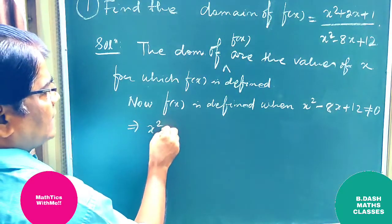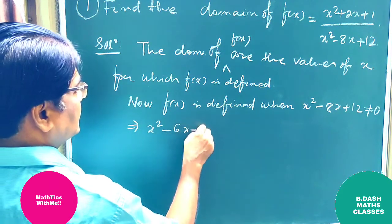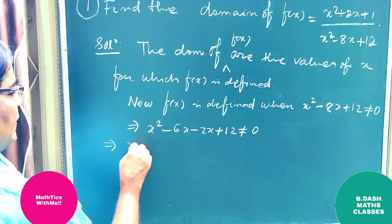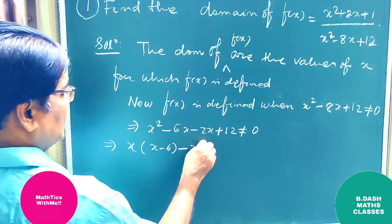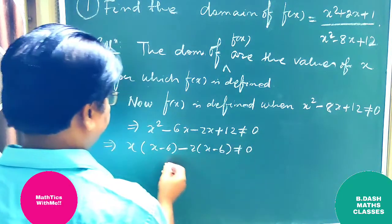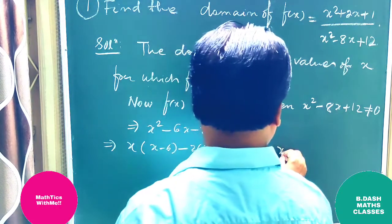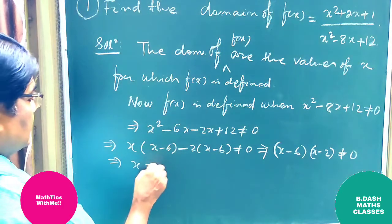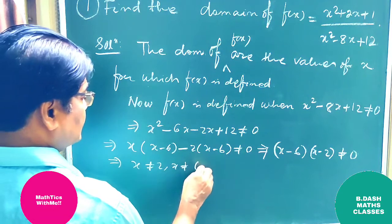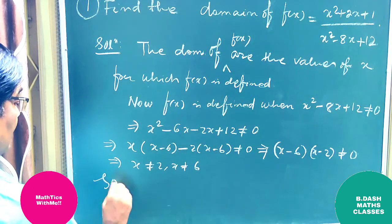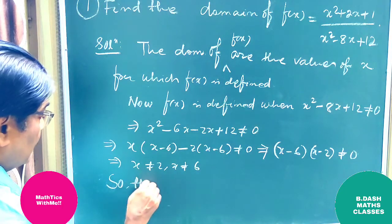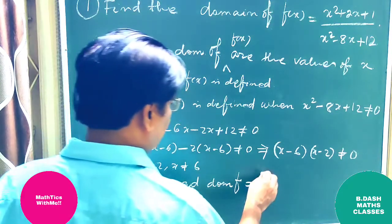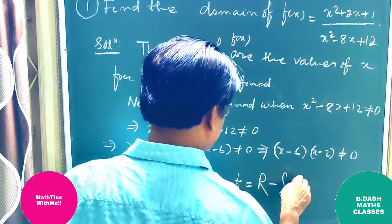This gives us x² - 6x - 2x + 12 ≠ 0. Taking x common: x(x - 6) - 2(x - 6) ≠ 0, which implies (x - 6)(x - 2) ≠ 0. This means x ≠ 2 and x ≠ 6. Therefore, the required domain is the entire real number set minus the set {2, 6}.